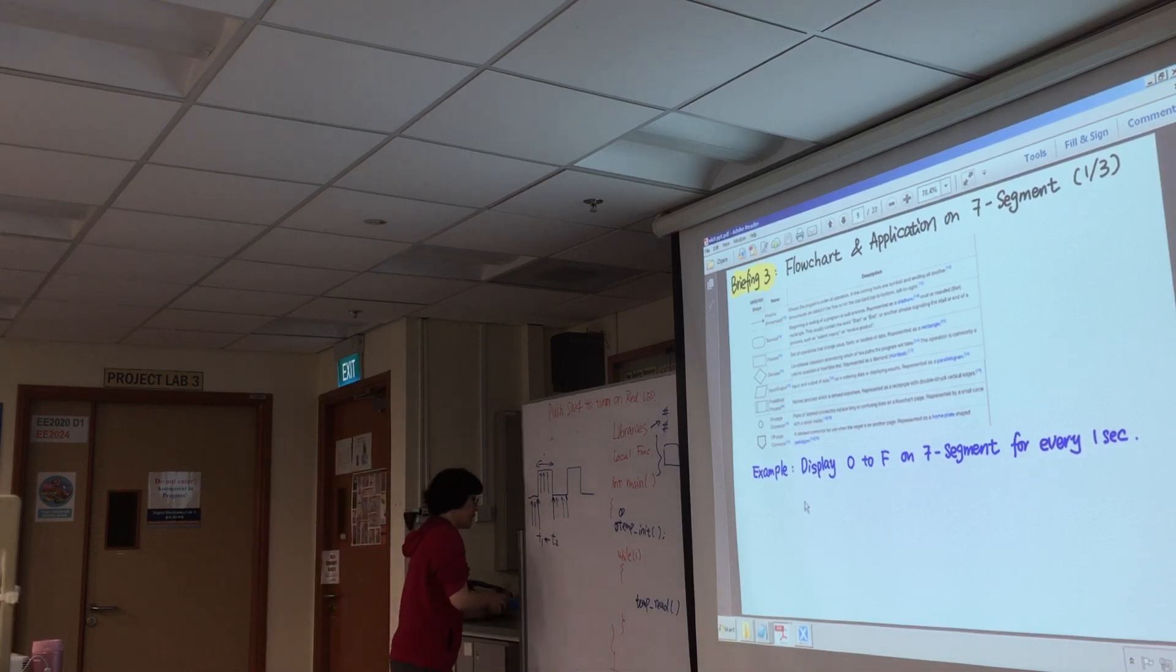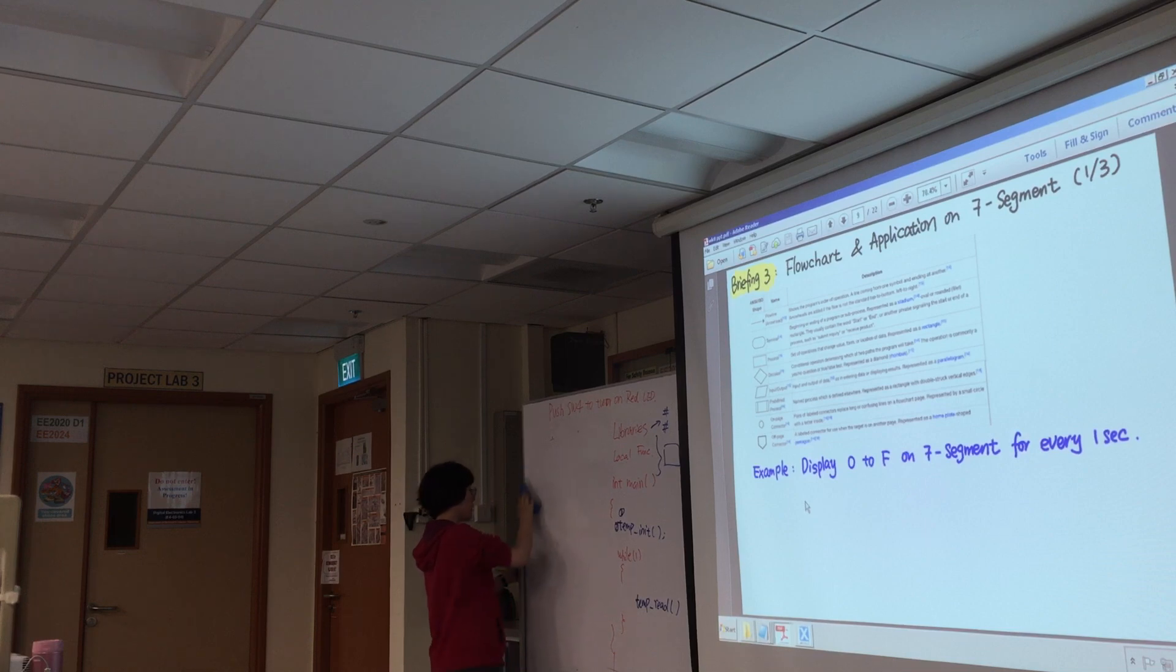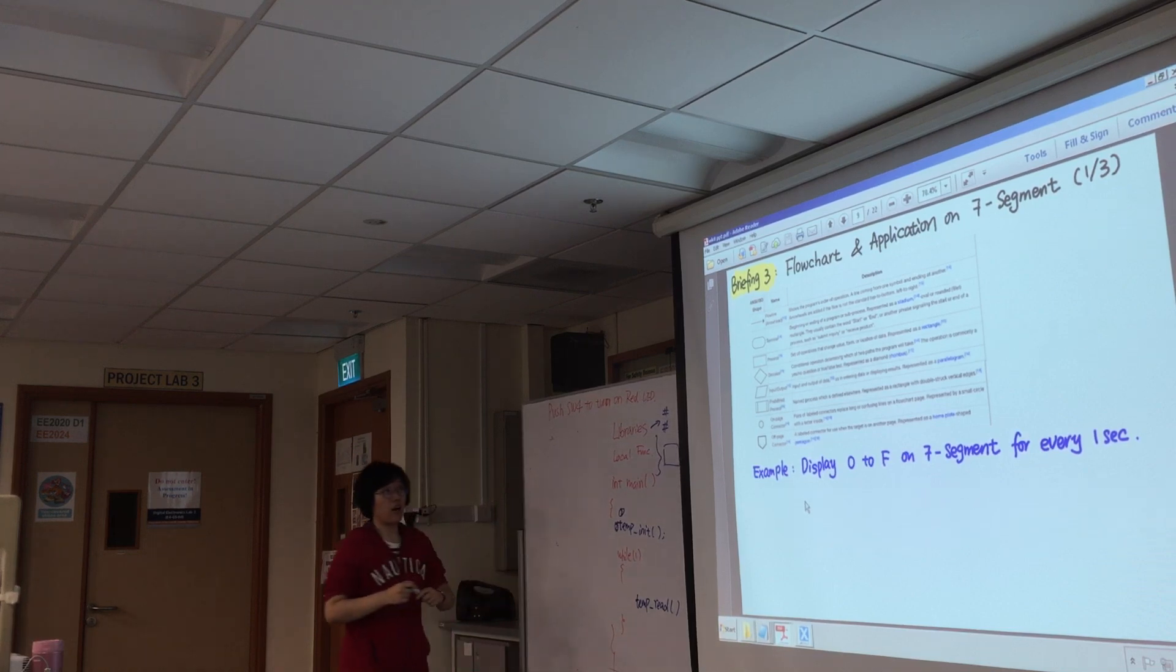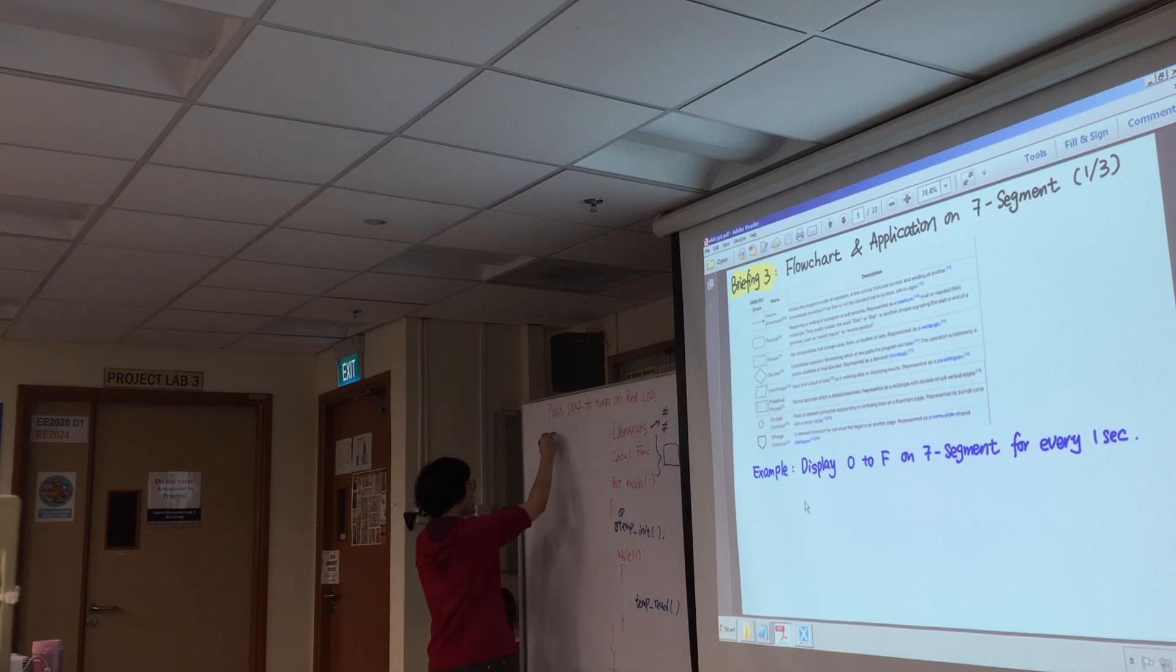So you will have something like, when your program starts, I hope you are all familiar with these symbols. So basically this shape will be like start. When your program starts, maybe you are checking some conditions. And if it's yes, you go this way. If it's no, you go this way.